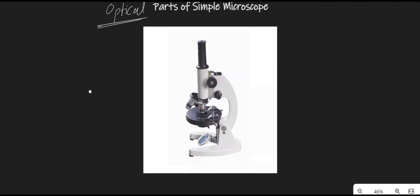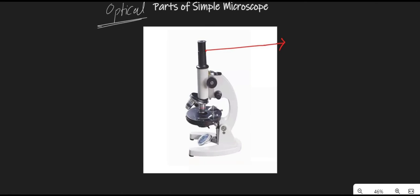Now let's talk about the optical parts of the microscope. The first optical part is called the eyepiece. The eyepiece is the lens used to study the samples and is placed at the top of the microscope. It has a magnification of 10x to 15x.